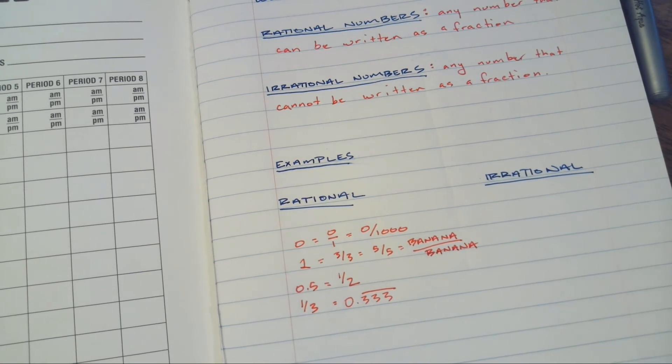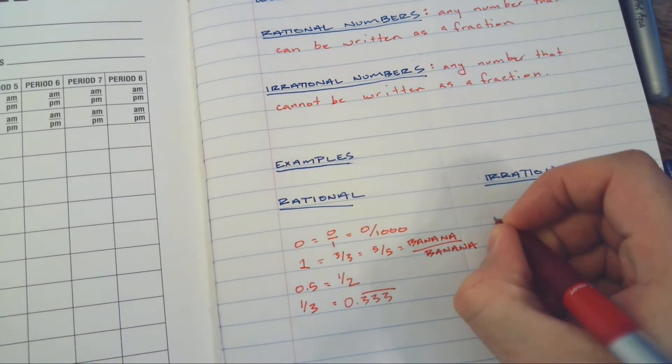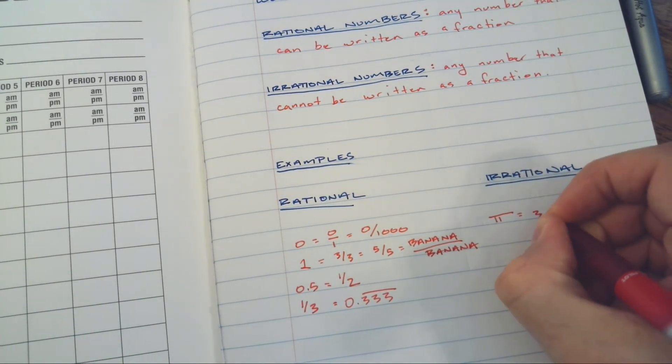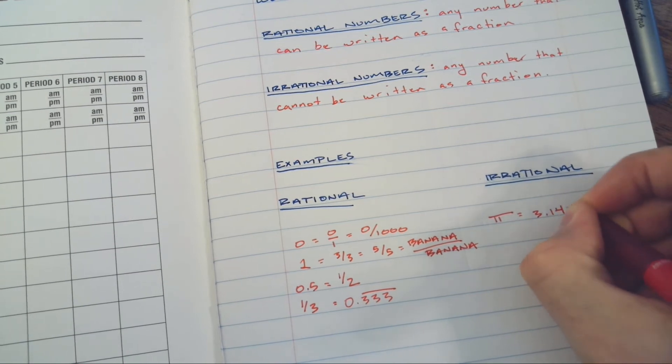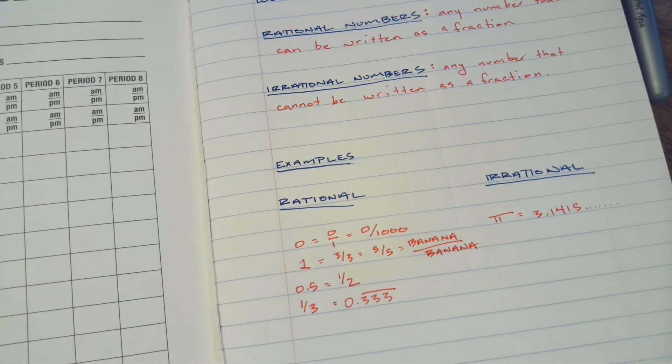When you start talking about irrational numbers, our most famous example is pi. Pi, if we go to write it out, it's 3.1415, and then pull up your favorite weird math site and keep going forever. So it's dot dot dot into infinity there. So we can't actually write the entirety of pi as a fraction.